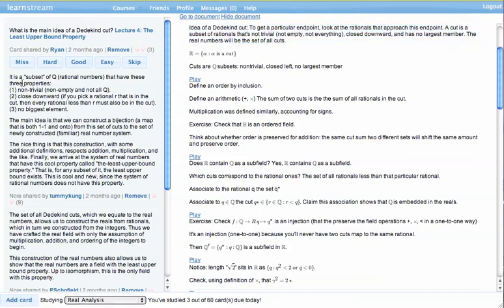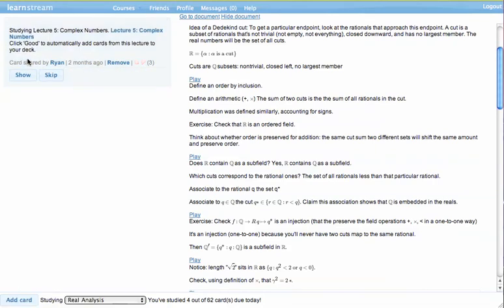So this question, because I wasn't able to recall it, I missed. I click miss, and what that does is it accounts for the fact that this card is giving me a lot of difficulty in the LearnStream review system, and so that will be scheduled to reoccur a lot sooner than something that was easy.